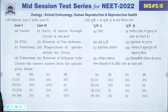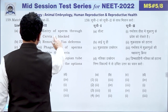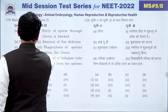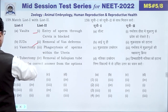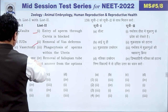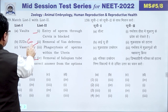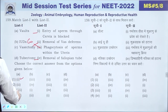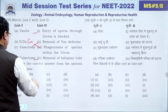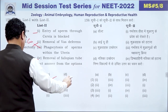Question 159: Matching contraceptives — vaults block entry of sperm through the cervix (A-1); tubectomy involves removal of fallopian tubes (C-2); IUDs (copper) increase phagocytosis of sperm (B-3); vasectomy involves removal of vas deferens (D-4). The answer is 1.